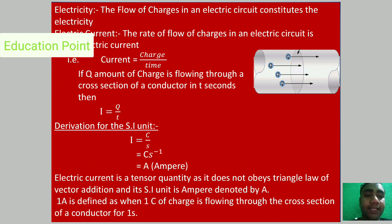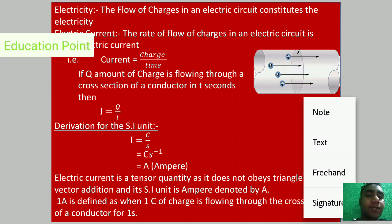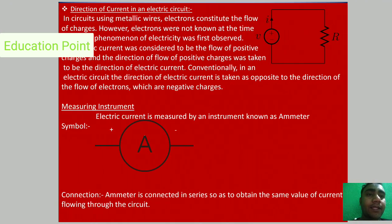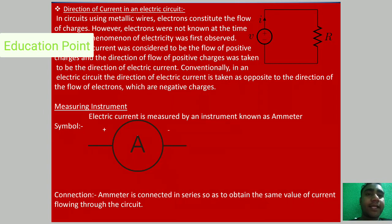Electric current is a scalar quantity — it does not obey the triangle law of vector addition — and its SI unit is ampere, denoted by A. One ampere is defined as the current when one coulomb of charge flows through a cross-section of a conductor for one second.